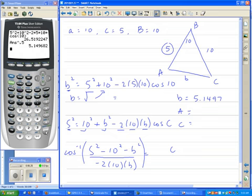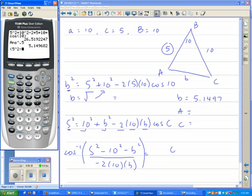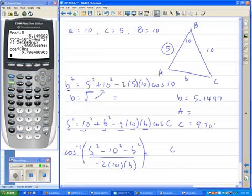So, I'll type in that mass. Group your top. 5 squared minus 10 squared minus the B squared. Thank goodness that's my last answer. So, I'll just import that. Close your parentheses. Divide. Group the bottom. Negative 2 times 10 times the previous answer for B. Group that. Enter. And then I'll take second cosine, cosine inverse of that mass. And there is my C angle, 9.7065.